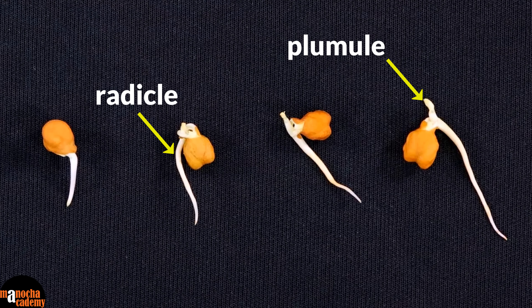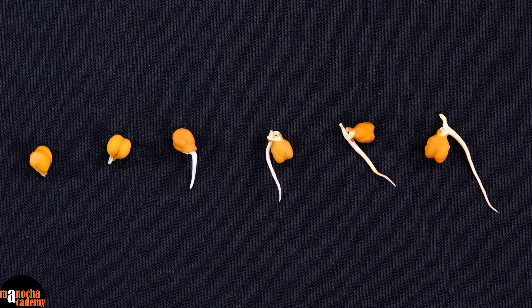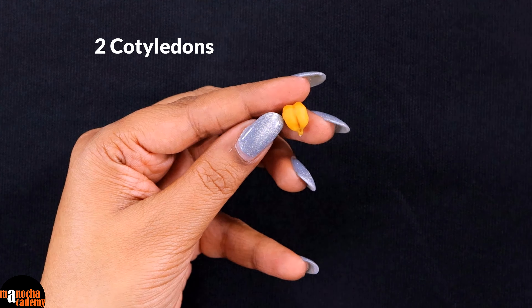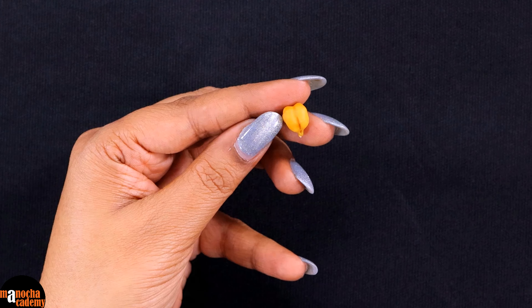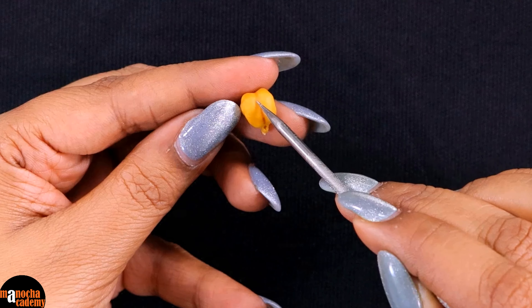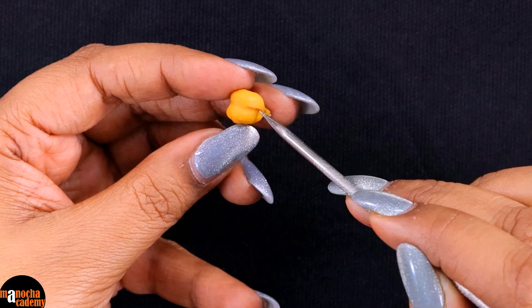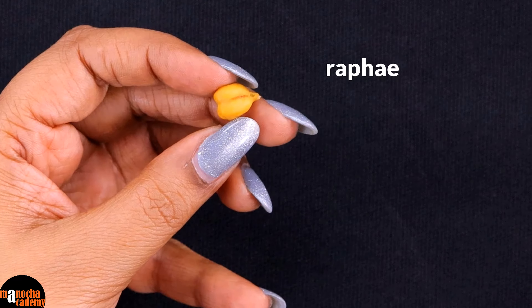We are going to dissect one of these seeds and look at its different parts, learn what the different parts are, and look at the different parts of the embryo. The gram seed has two cotyledons — it is a dicotyledonous seed. There is a slight depression in between the two cotyledons where they join, and this is known as the raphe.